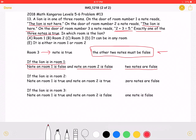Which, as we wrote over here, is what we want. However, let's keep going and see what would happen if the lion was in the other two rooms.